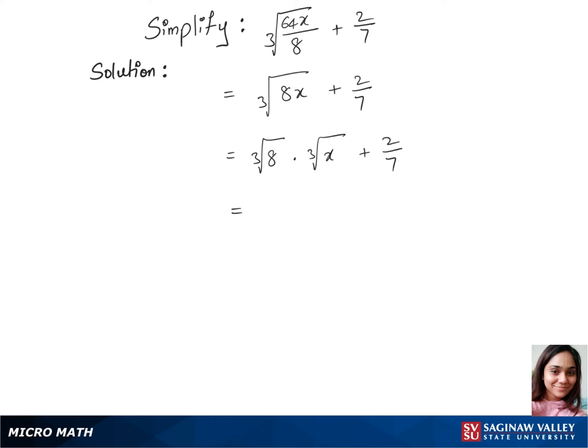Now cubic root of 8 is 2 because 8 is 2 to the power 3, times cubic root of x plus 2 over 7.